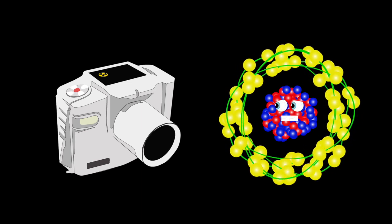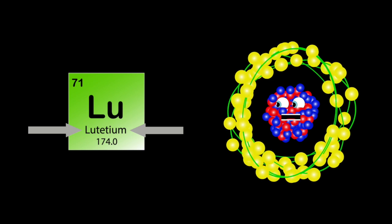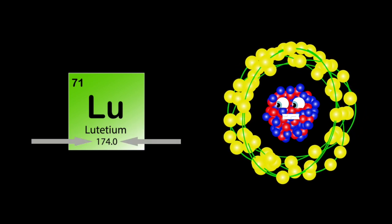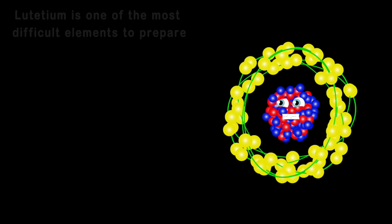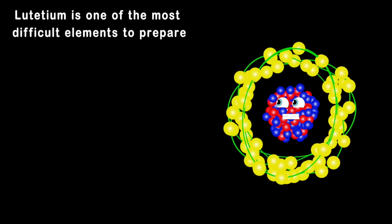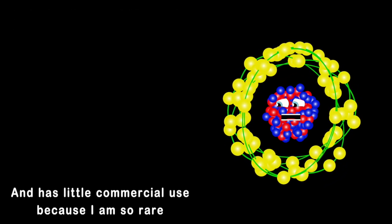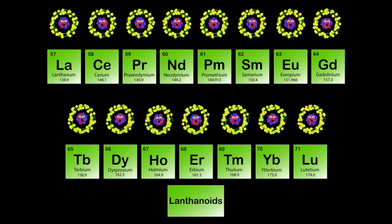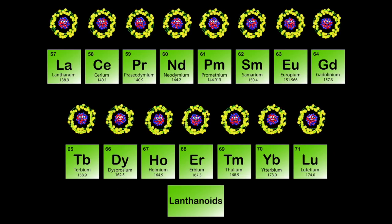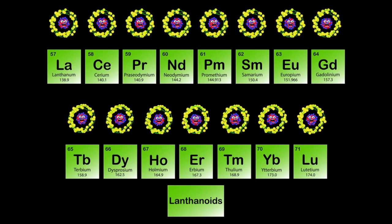My symbol is LU, I am lutetium, atomic mass is 174, my atomic number's 71. Lutetium's one of the most difficult elements to prepare, and I have little commercial use because I am so rare. We are the lanthanoids, or the rare earth metals, 57 to 71, on the periodic table.